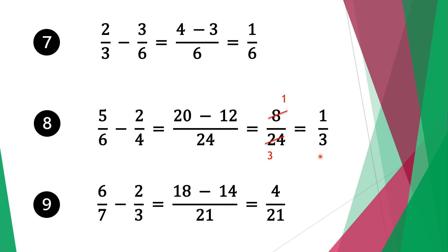Moving on to question nine, we have six over seven minus two-thirds. Again we have different denominators, so we multiply seven by three to get twenty-one. Twenty-one divided by seven is three, three times six is eighteen. Do the same for the second fraction: twenty-one divided by three is seven, seven times two is fourteen. Eighteen minus fourteen is four, so our solution is four over twenty-one.